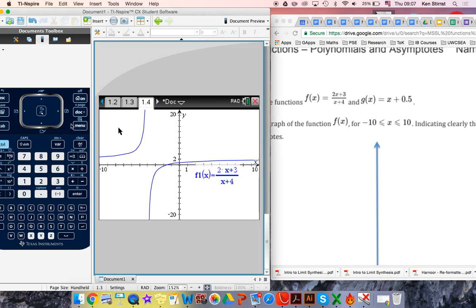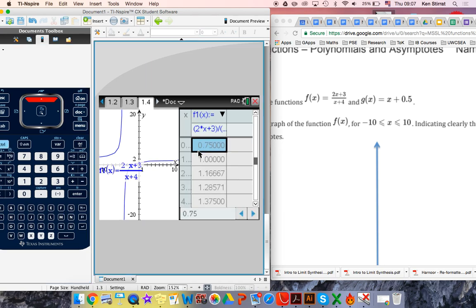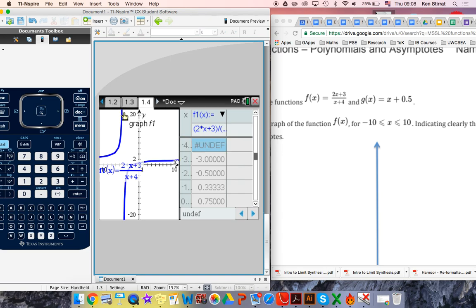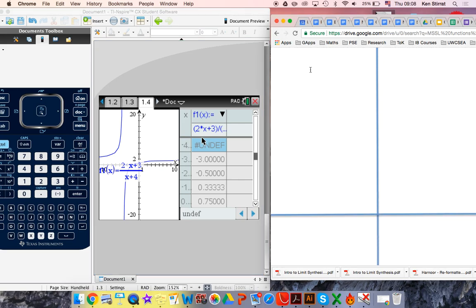To confirm that, go control T. We can toggle to the table of values. And as I scroll up and down the table of values, you find that when x is negative 4, the function is undefined. As in the output, the y value is undefined. It doesn't exist. So technically what we have here is an asymptote. x equals negative 4 is an asymptote. You would draw that on your graph by having a dotted line on x equals negative 4.